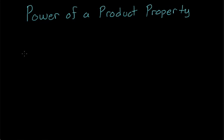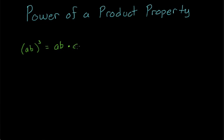We'll talk about the power of a product property, which is basically an application of the power of a power property. I'm only going to give you one quick example here because that's all you're really going to need. Let's say we take the product AB and we raise it to the third power. We can analyze this by rewriting it in expanded form: AB times itself three times — AB times AB times AB.